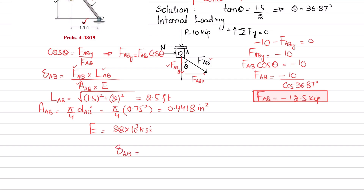Now substituting all values: δ_AB = (−12.5) × (2.5 × 12 inches) / (0.4418 × 28 × 10³). Note that 2.5 feet is converted to inches by multiplying by 12, to be consistent with the units of E (ksi) and area (in²). Solving this gives δ_AB = −0.03032 inches.